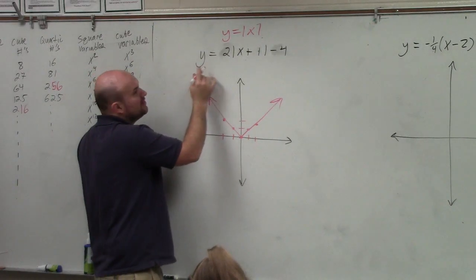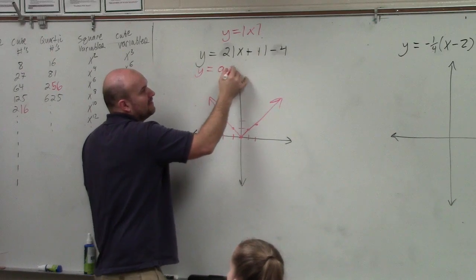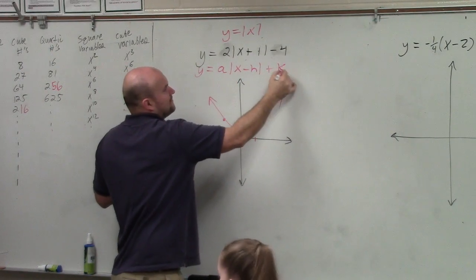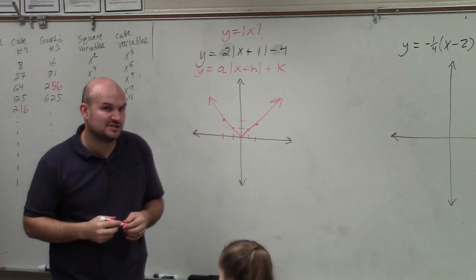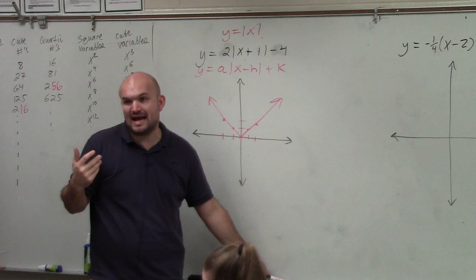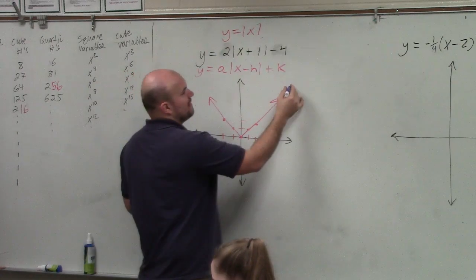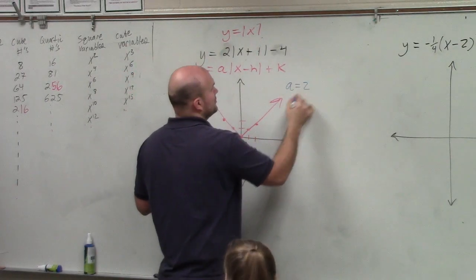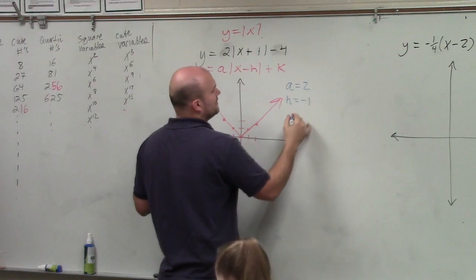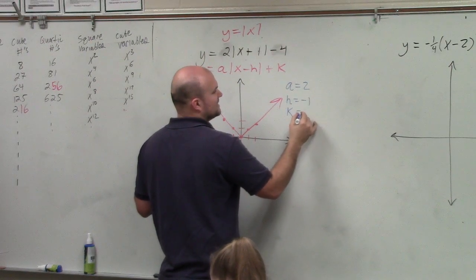But then what we learned was there's ways that we can transform the graph: x minus h plus k. So if you're given a transformation, the best thing that I would do is determine what your a, h, and k are. So my a in this case is 2, my h in this case is negative 1, and my k in this case is negative 4.